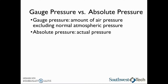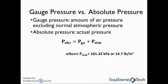To find the absolute pressure, we will take the gauge pressure and add atmospheric pressure, where the atmospheric pressure is 101.32 kilopascals or 14.7 pounds per square inch, depending on what the gauge pressure is given.